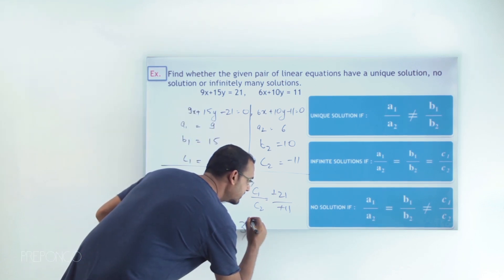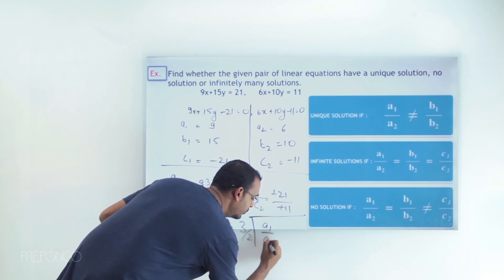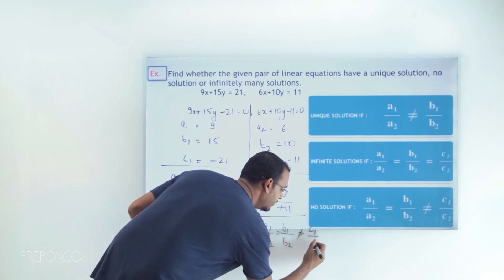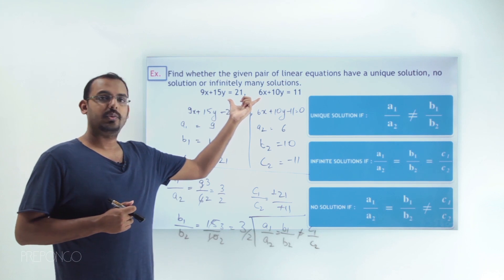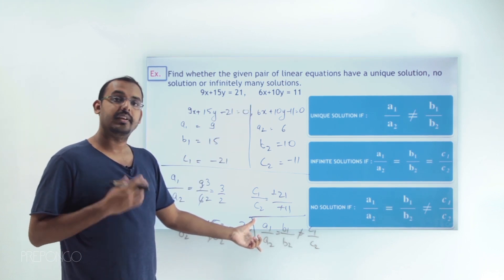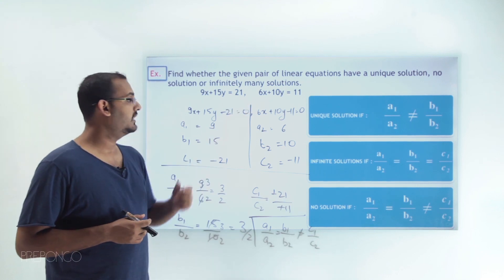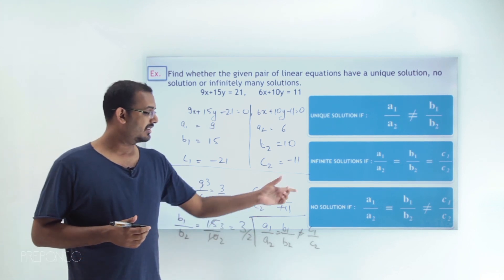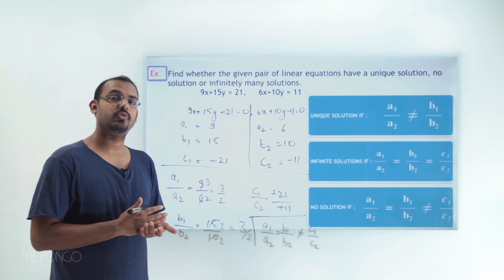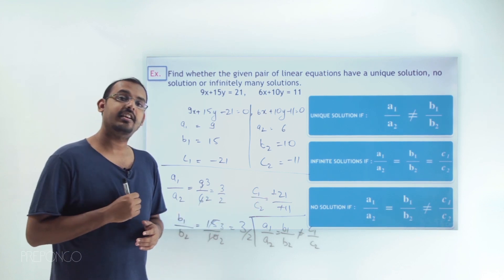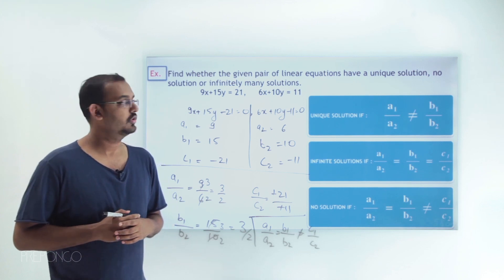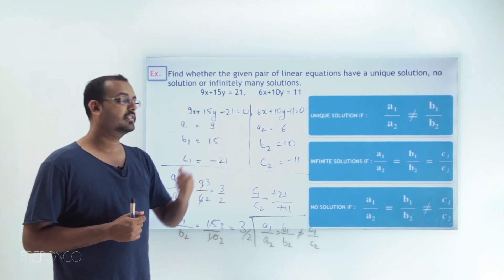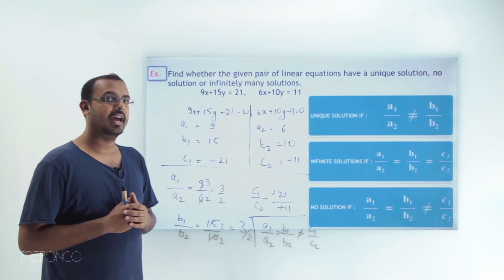So we get the expression a1/a2 = b1/b2 ≠ c1/c2. This pair of linear equations satisfies the condition for no solution, because a1/a2 = b1/b2 ≠ c1/c2 stands true. Therefore, the pair of linear equations 9x + 15y = 21 and 6x + 10y = 11 actually has no solution.